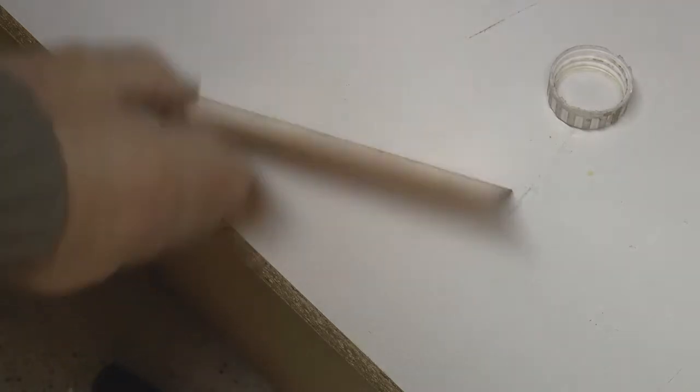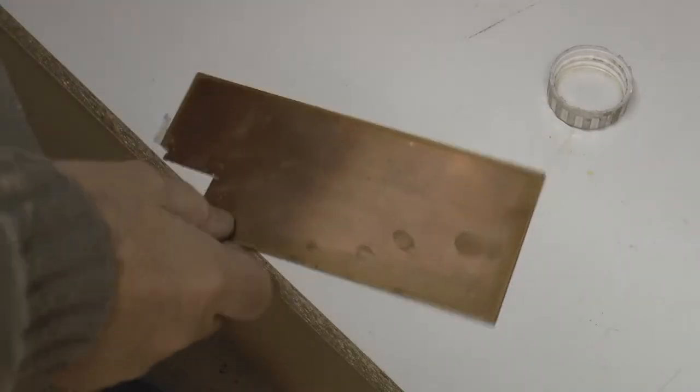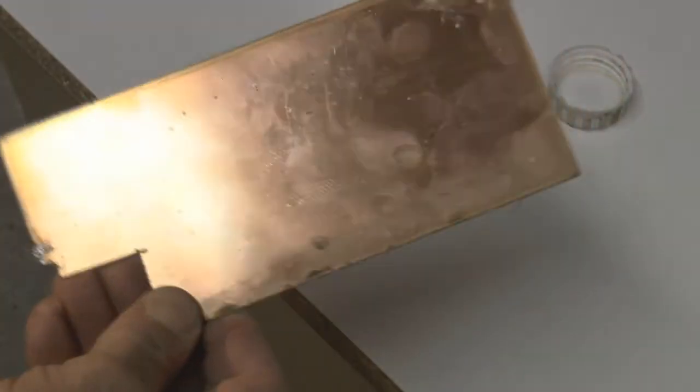So basically, I've got a piece of 16 gauge copper sheet here which, as you can see, is nothing special, but I am choosing an area on it that hasn't got many scratches on it.